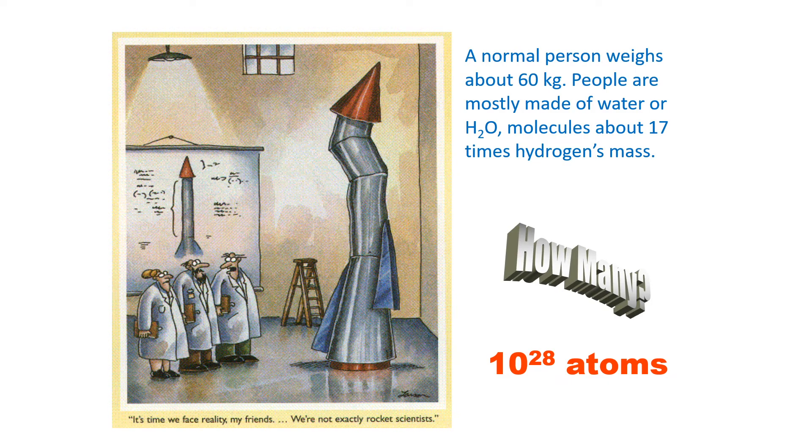A normal person weighs about 60 kilos. People are mostly made of water, or H2O, which are molecules 17 times hydrogen's mass. And so doing that math, a person, a typical person, is made of 10 to the 28 atoms, one with 28 zeros after it.